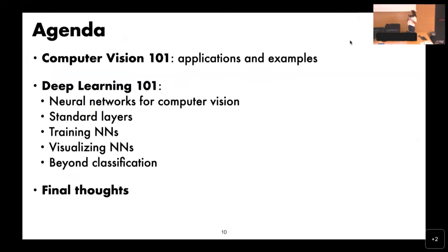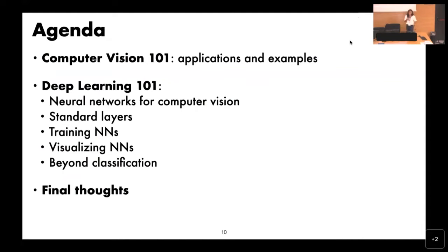We want to summarize what standard layers consist of in a deep neural network, how we train them, how we can interpret and visualize what's going on given a trained model, some tasks beyond classification, and some progress we've made since the 2012 revolution. I'll conclude with some final thoughts, which are very subjective.